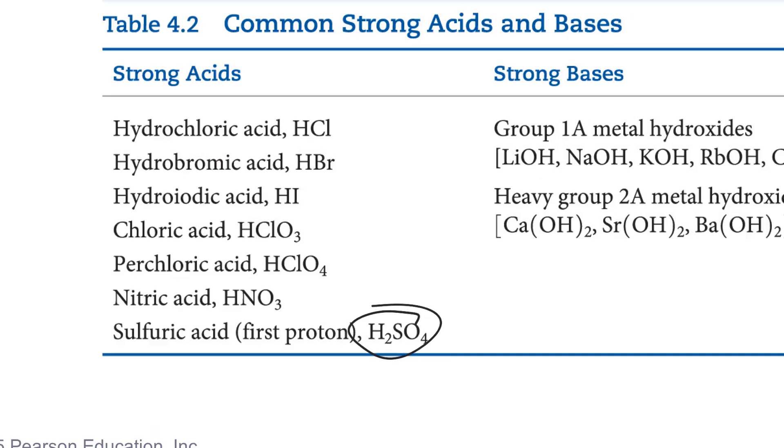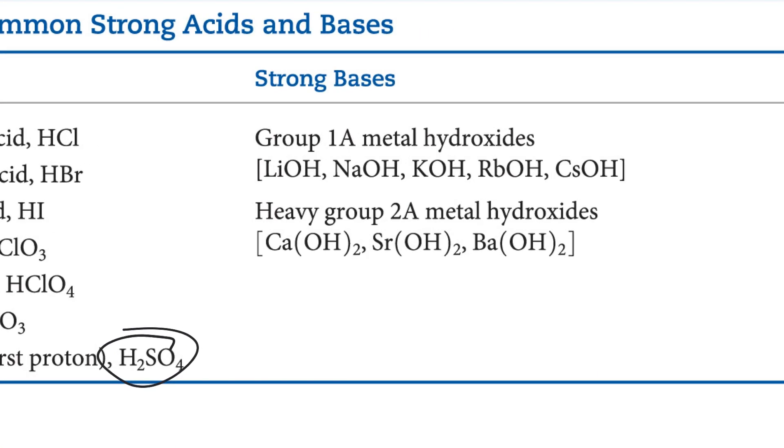The strong bases are the group 1 metal hydroxides. Lithium, sodium, potassium, rubidium, cesium. And the heavy, group 2 hydroxides, which are the ones not beryllium, but further down, calcium, strontium, barium.